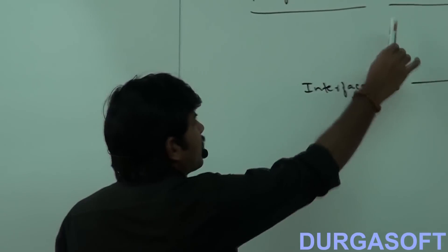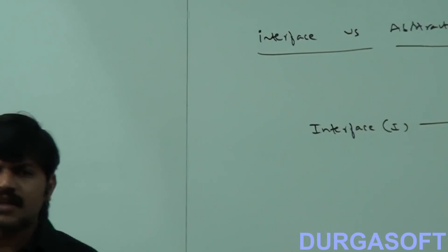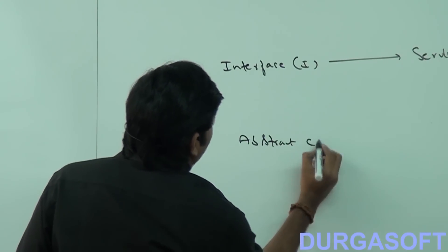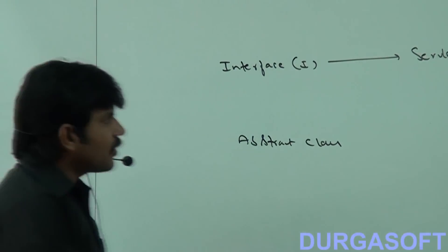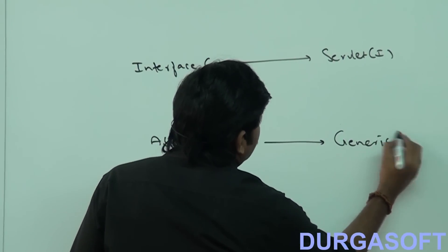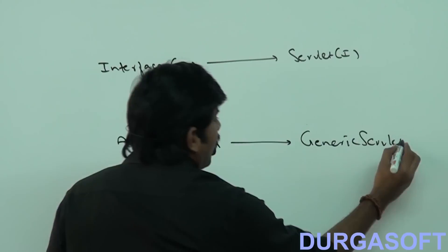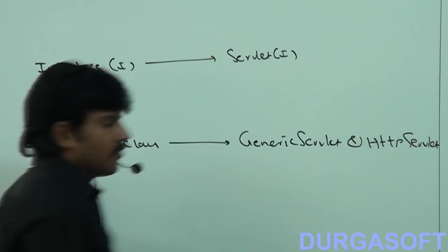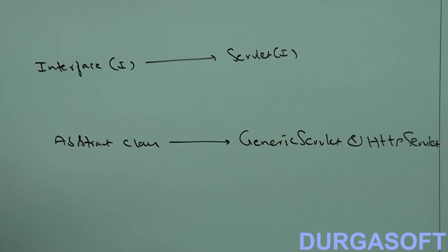When should we go for abstract class? When we are talking about implementation but not completely — just a partial implementation. If we are talking about implementation but not completely, partial implementation, then we should go for abstract class. Examples of abstract classes are GenericServlet and HttpServlet.